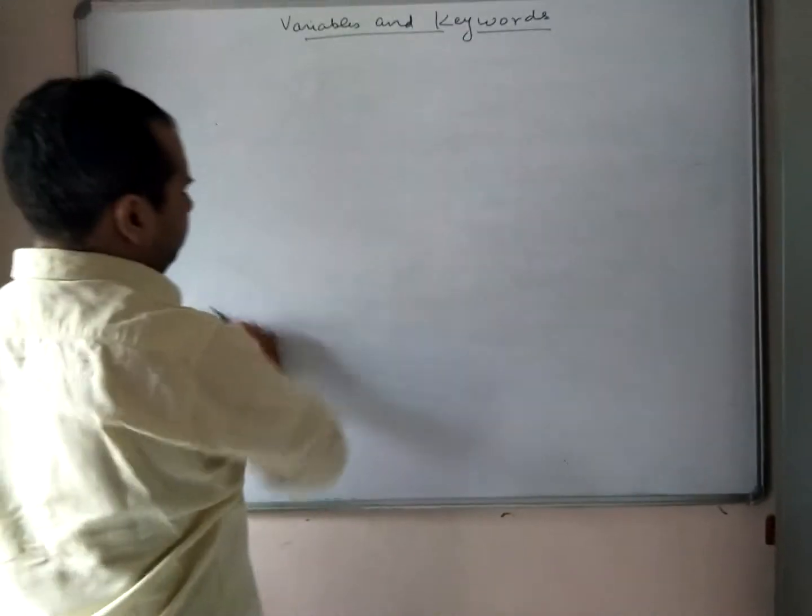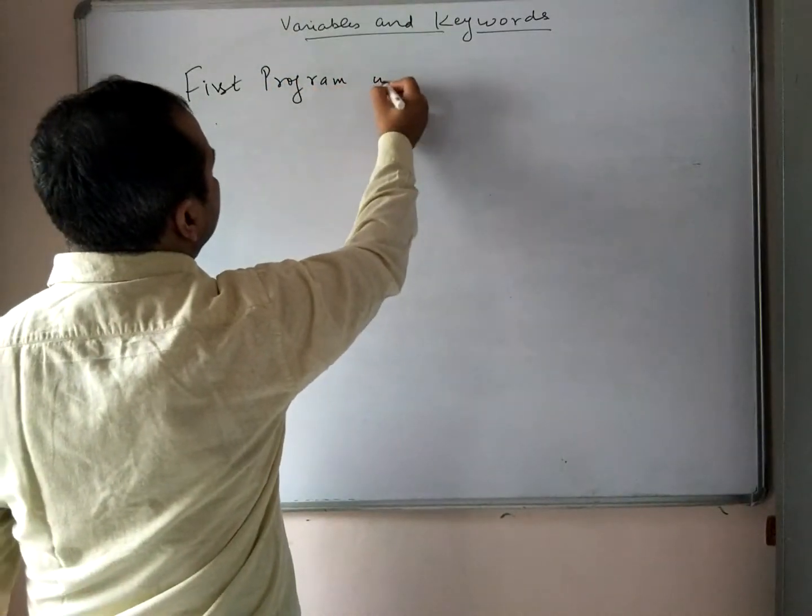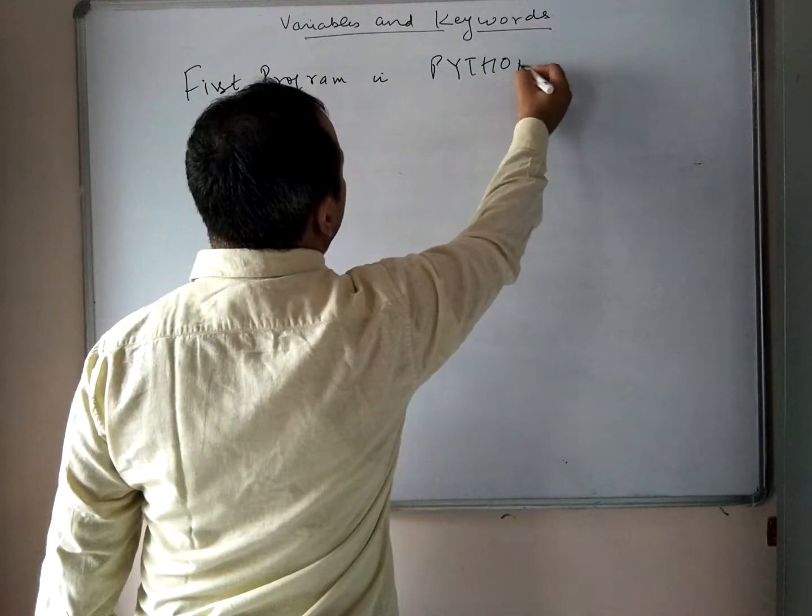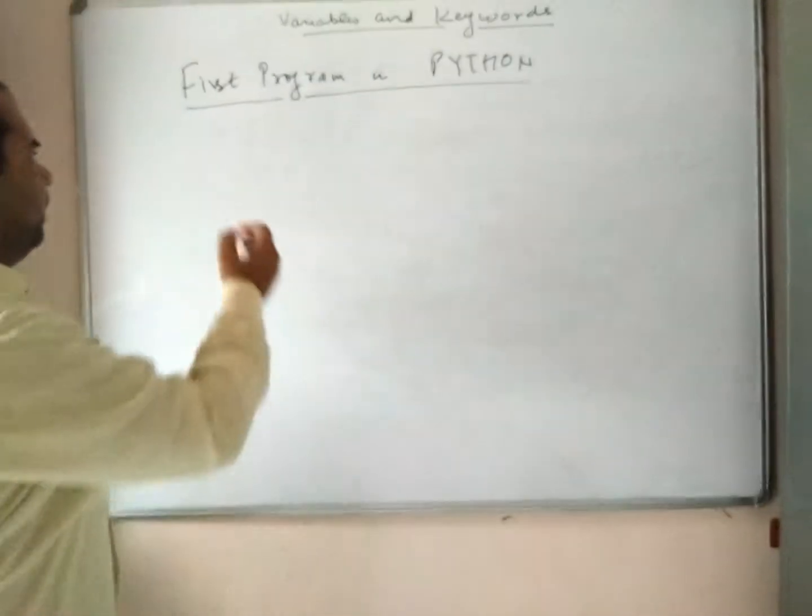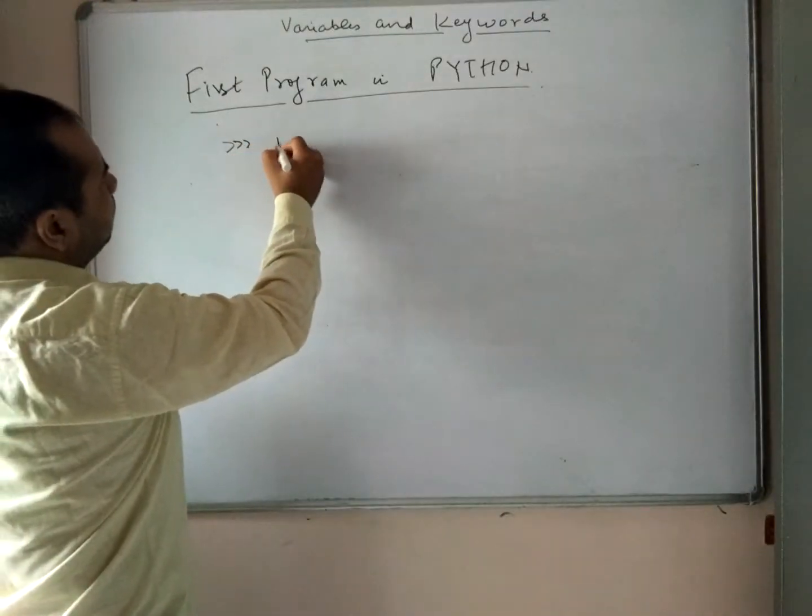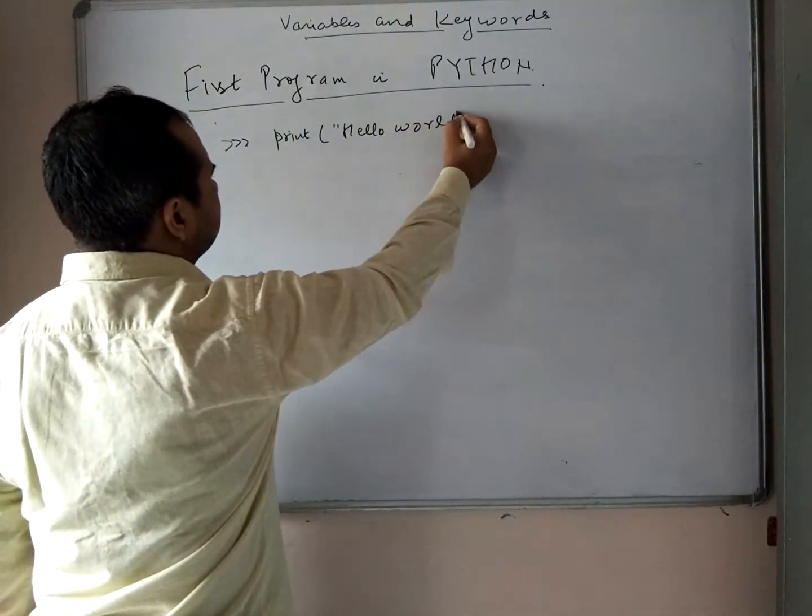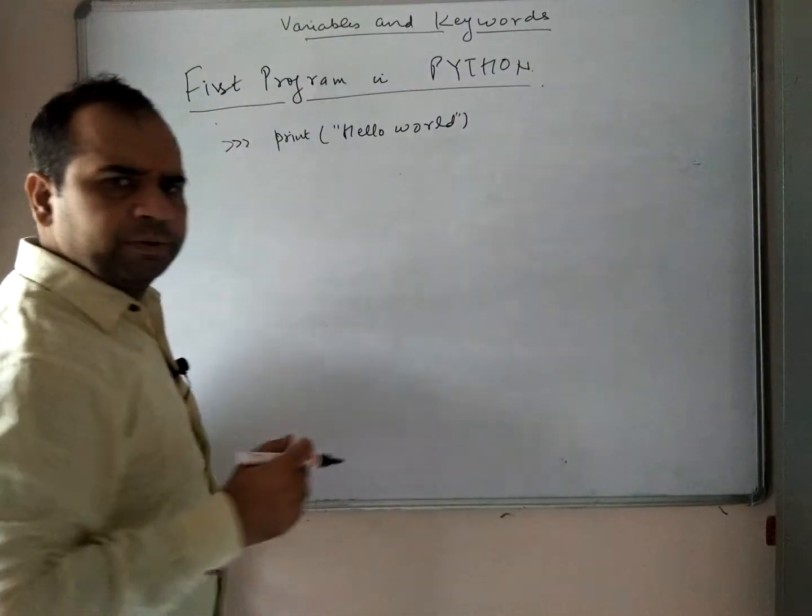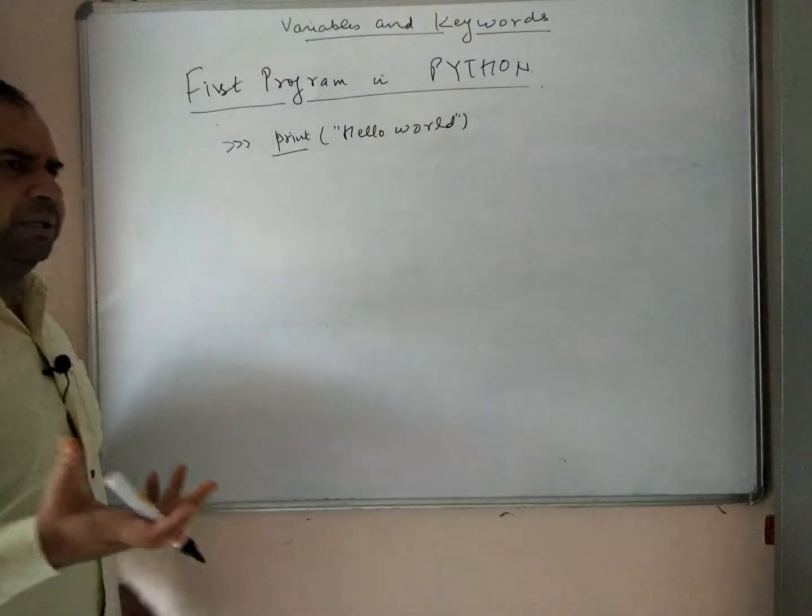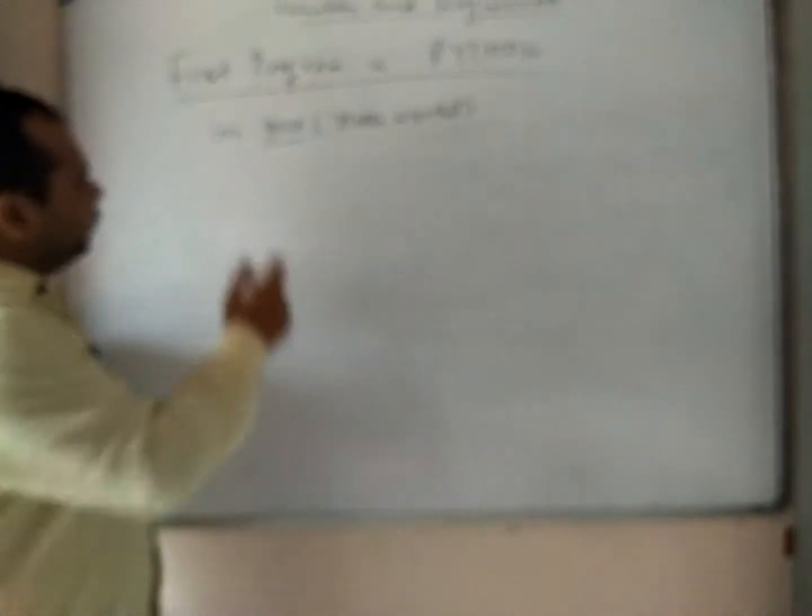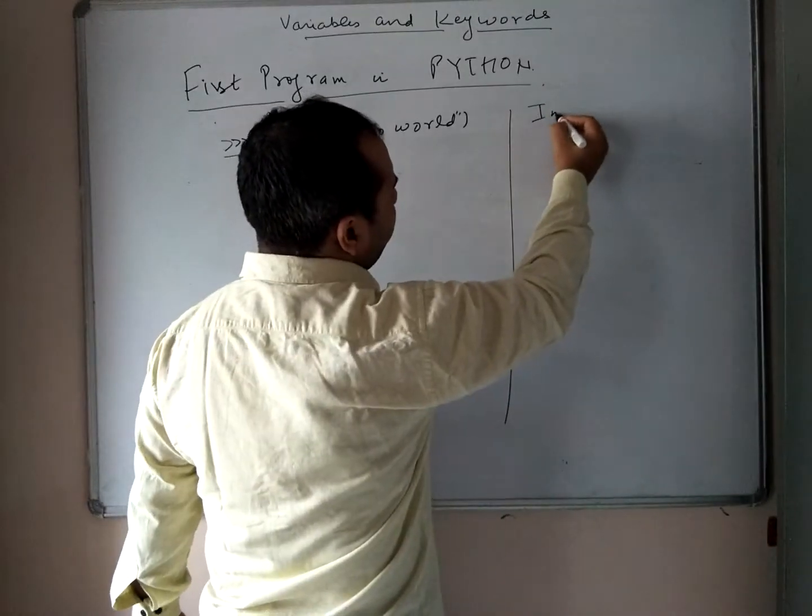The first program in Python, as we all know, is normally written as a simple program: print('Hello World'). Print means to print a particular thing, and 'Hello World' is a string. The idea is that when you write this at the command prompt—print('Hello World')—now how are you going to install Python? That is very important.